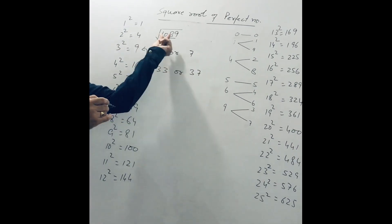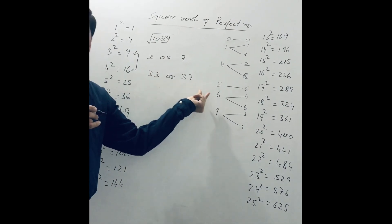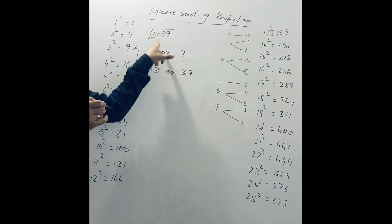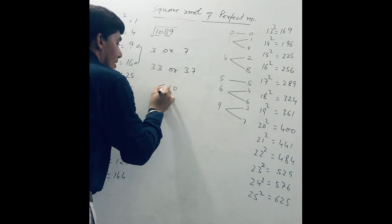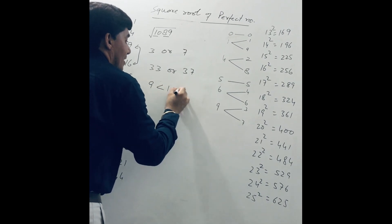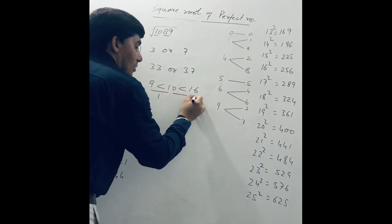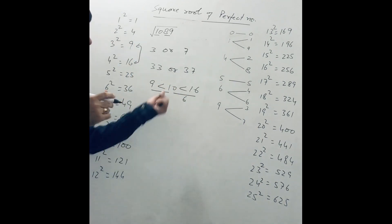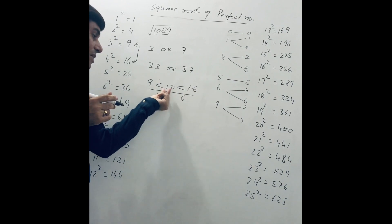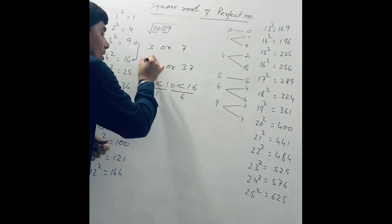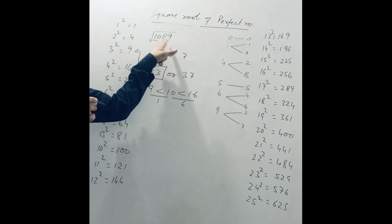That means the square root of 1089 is either 33 or 37. How do we decide? We see 10 is greater than 9 and less than 16. The difference between 9 and 10 is 1, and the difference between 10 and 16 is 6. So 10 is nearer to 9. That means the lowest value, 33, is the exact answer for the square root of 1089.